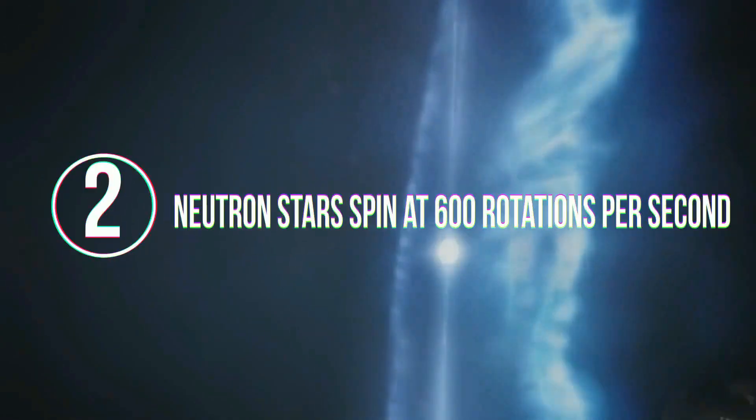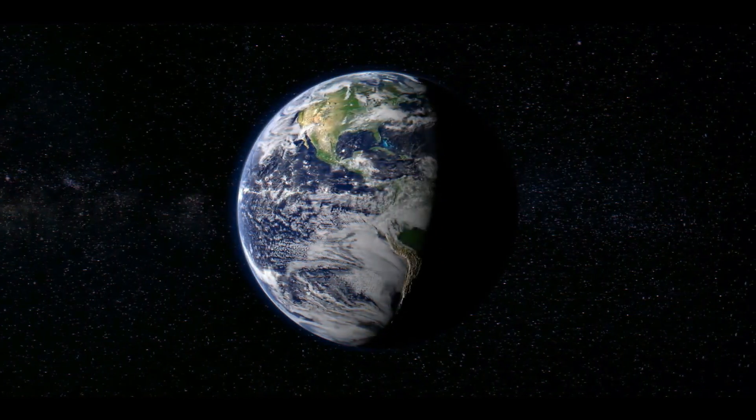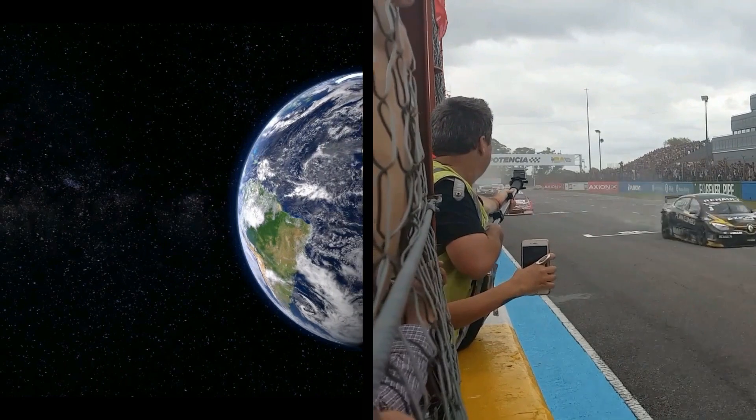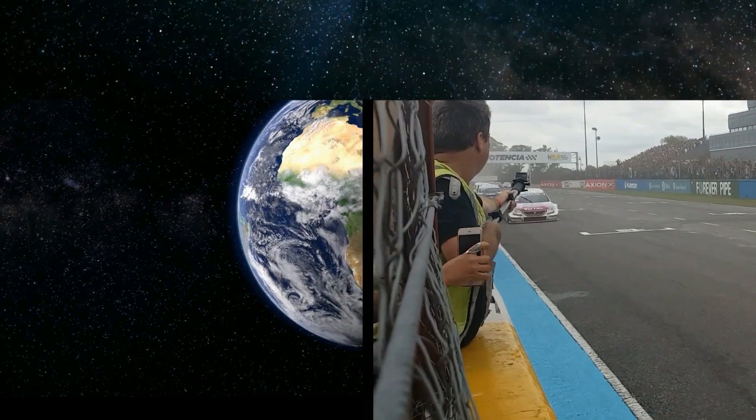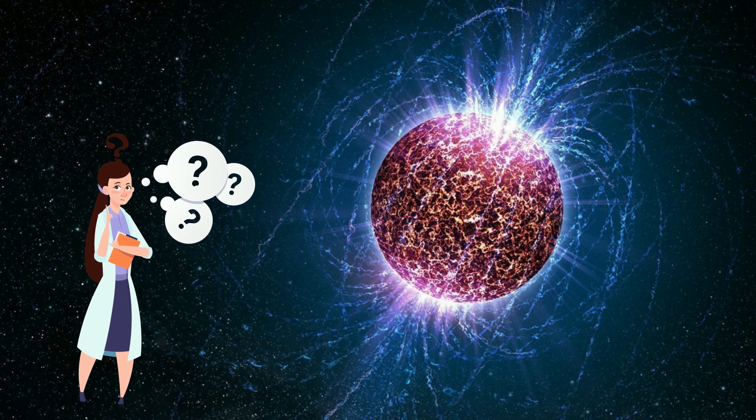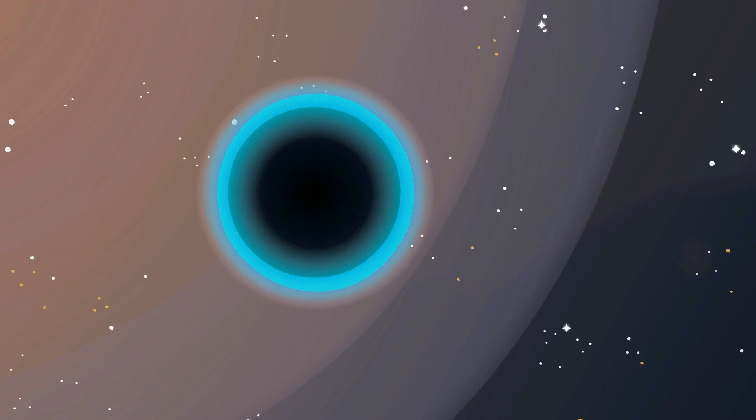Number 2. Neutron stars spin at 600 rotations per second. The Earth is rotating at an incredible speed. More than a sports car in fact. But it is practically nothing when compared to the neutron stars. But what exactly are these neutron stars? They are one possible byproduct of the endpoint of high-mass stars.